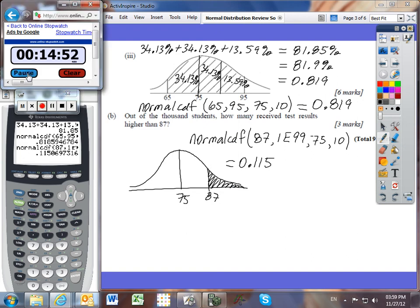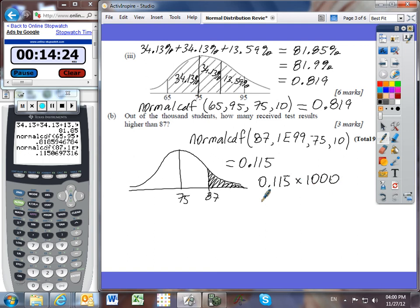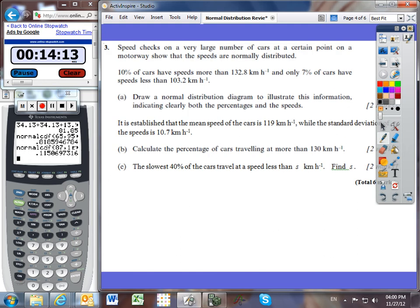I just realized that I actually didn't quite finish off the previous problem. All I've got right now is the probability of us getting a score of greater than 87. But then it says, out of the 1,000 students, how many of them received test results higher? So we know that 0.115 is the percentage or the proportion of the 1,000 students. Let's take that 0.115 and multiply it by my 1,000 students, and we'll find then that there were 115 students who scored higher than 87. Let's move on then to question number 3.